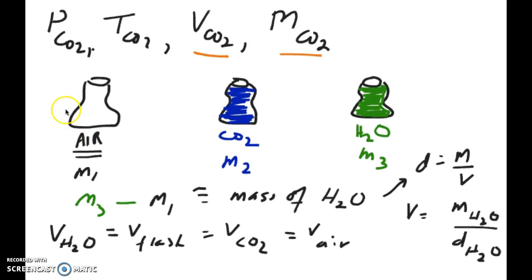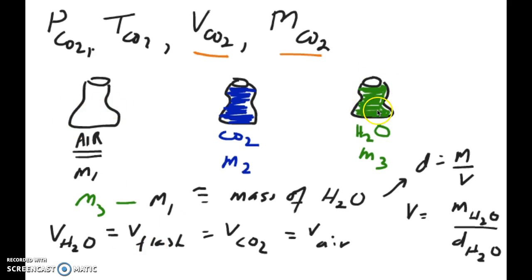The volume of air is something we can calculate or measure using a trick. Remember from the first video: volume is the same for the flask regardless of what's filling it. So the volume of the flask equals the volume of water if I fill it with water, it also equals the volume of CO2 if I fill it with CO2, and it's the same as the volume of air. So we can get the volume of air as long as we know the volume of the flask, which equals the volume of water.